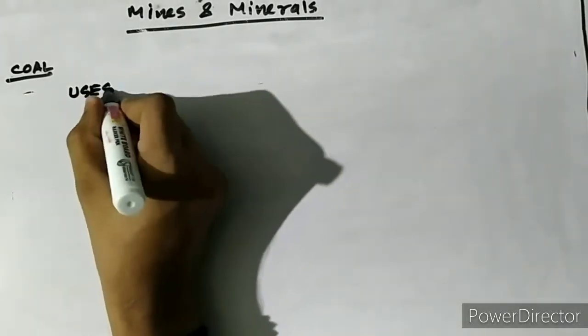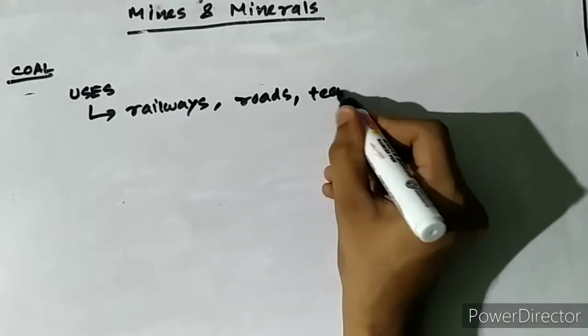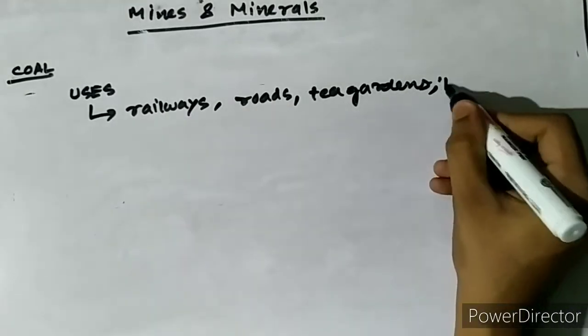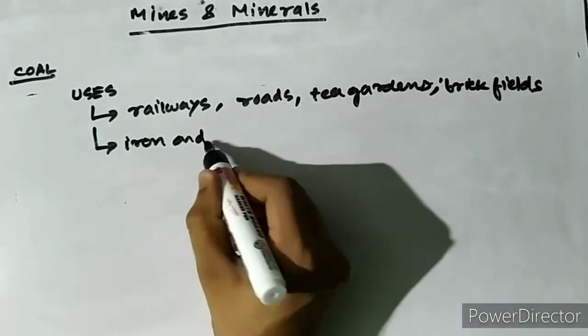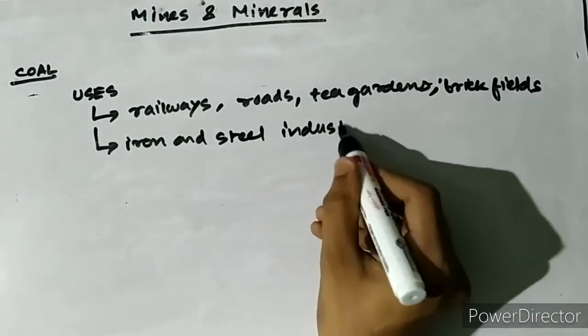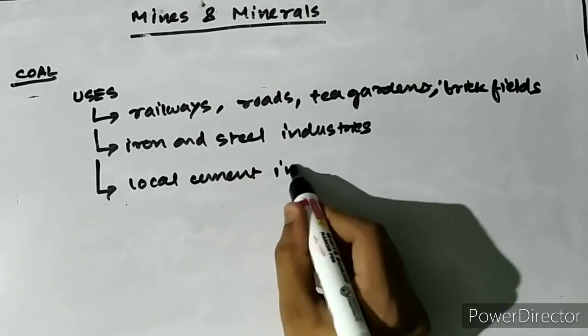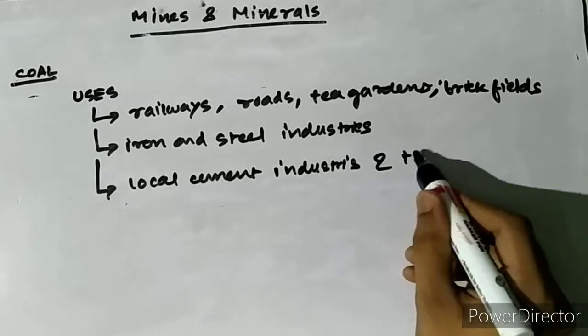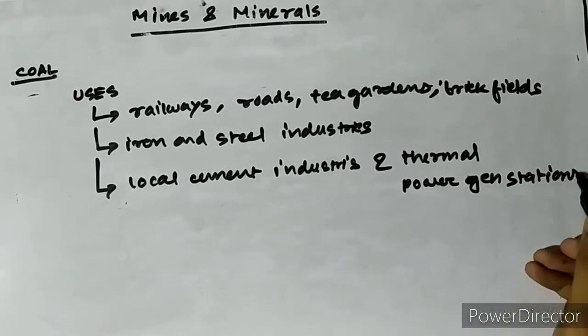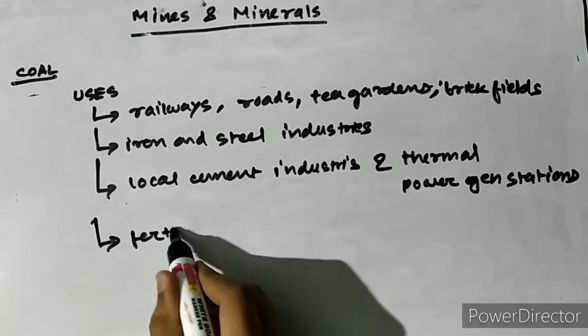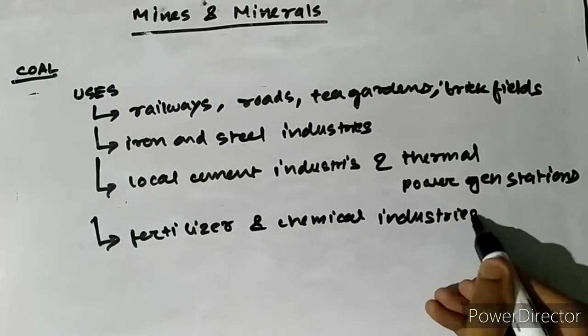Uses of coal in this region are various. At present, the coal is used by the railways, tea gardens, brick fields, and for domestic purposes. Some amount of coal is sent to iron and steel industries for blending and some coal is used in local cement industries and thermal power generation stations. It is said that if coal produced in Assam is treated properly, it can be used in fertilizer and chemical industries also.